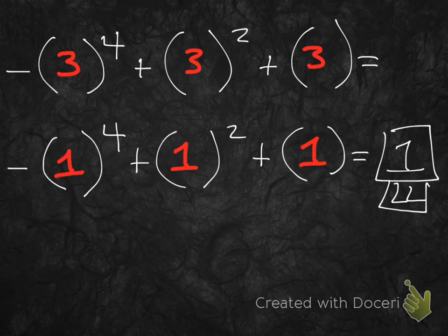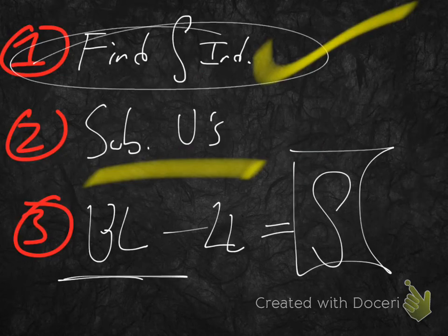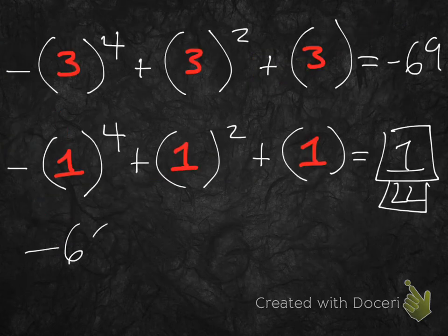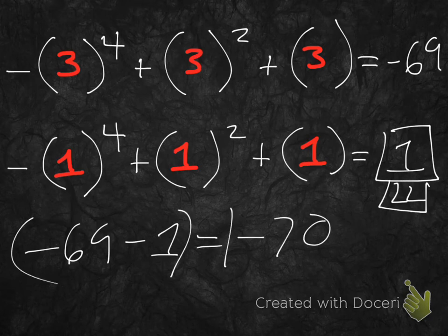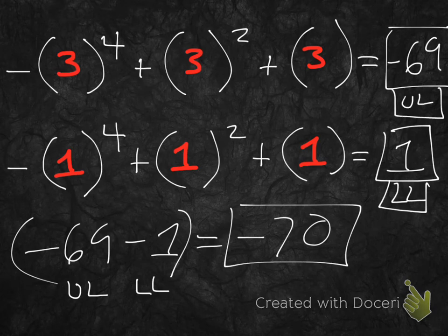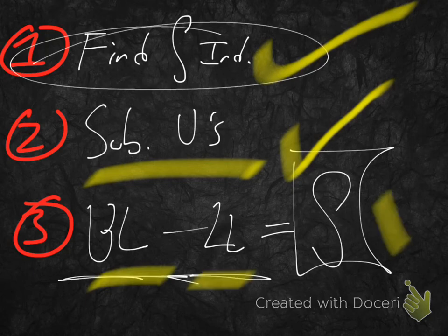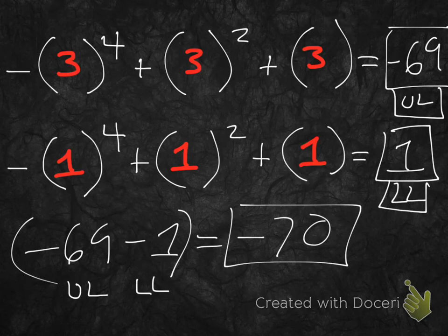Now for the upper limit: negative 3 to the fourth plus 3 squared plus 3. That equals negative 81 plus 9 plus 3, which is negative 69. So we subtract: negative 69 minus 1 equals negative 70. That's our definite integral.